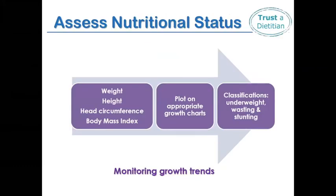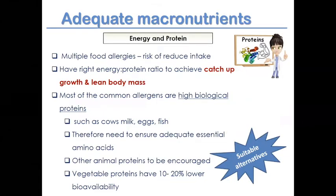Nutritional assessment involves plotting and classifying anthropometric measurements and constantly monitoring growth trends. For macronutrients, the right ratio of energy and protein is needed to ensure catch-up growth and lean body mass. Eliminated foods — cow's milk, egg, and fish — are high-biological-value proteins. Alternatives must be provided to ensure adequate essential amino acids. Vegetable protein has 10 to 20% lower bioavailability, so quantity must be adjusted accordingly.